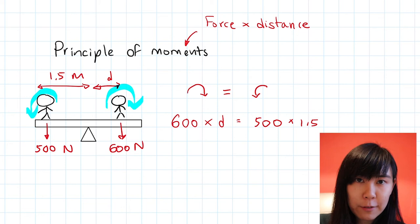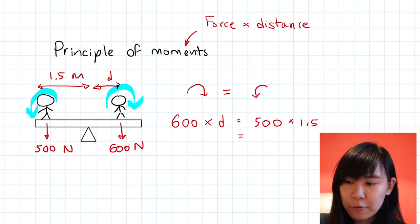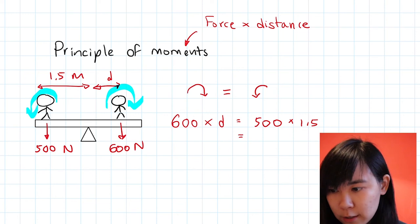Let's work out what's on the right-hand side first by multiplying 500 by 1.5. That's going to give us 750.